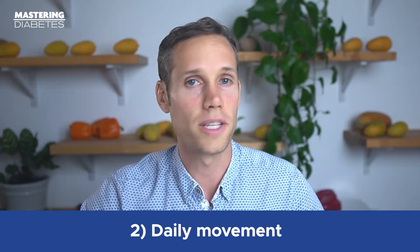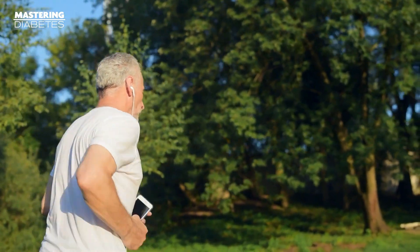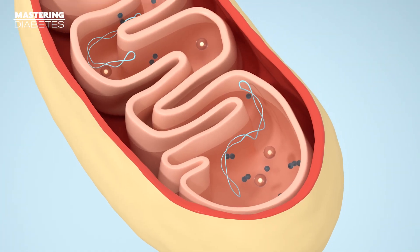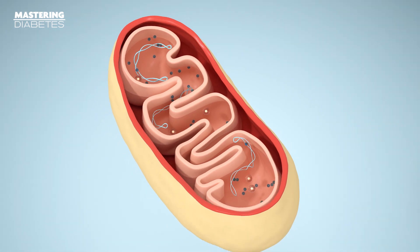Number two: daily movement. When combined with dietary changes, increasing your exercise and daily movement creates a positive feedback loop. More activity means your muscles can burn fat and glucose more efficiently, which reduces the amount of both in circulation. Sustained lifestyle changes that integrate more movement stimulate mitochondrial biogenesis, meaning your muscles produce more mitochondria to generate more ATP, which dramatically accelerates the process of reversing insulin resistance and type 2 diabetes.